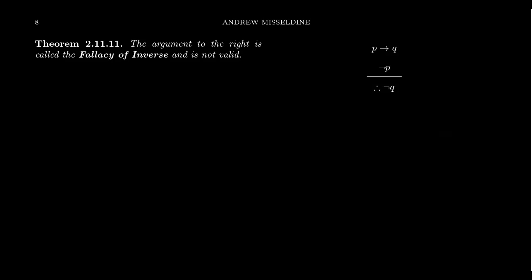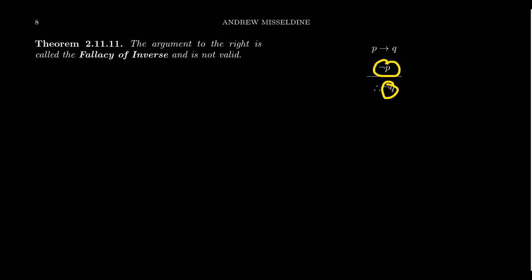As I end this lecture, I want to mention something related to the fallacy of converse: the fallacy of inverse, which has the structure P implies Q, not P, therefore not Q. The idea is: P implies Q, we know that. If the premise doesn't hold, you're saying the conclusion doesn't hold either — but that's not true. Much like the previous example: if I win the lottery I'll take my family to Hawaii, I didn't win the lottery, therefore I didn't take my family to Hawaii. That's the same fallacy, because great aunt Ruth could still provide the funds.